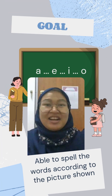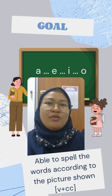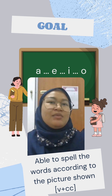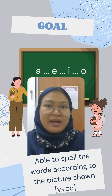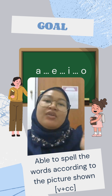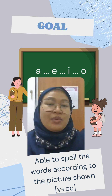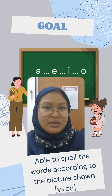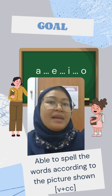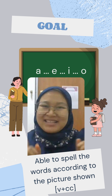Hi parents! Teacher Aunty here. So today we're going to be learning a new goal. Today we're going to learn how to spell words based on the picture shown. So we are going to spell a VCC word — it is a vowel plus consonant plus another consonant. Let's get started.